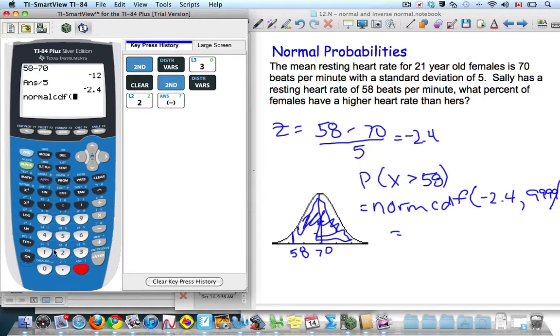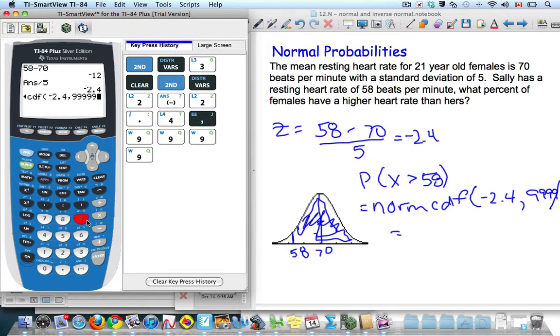I'm going to go from negative 2.4, big number, positive infinity, basically.